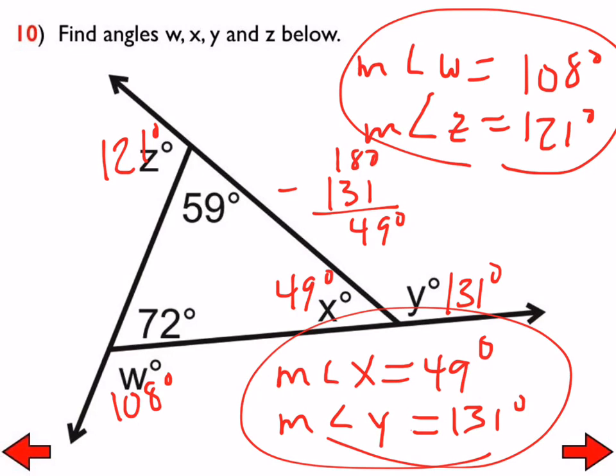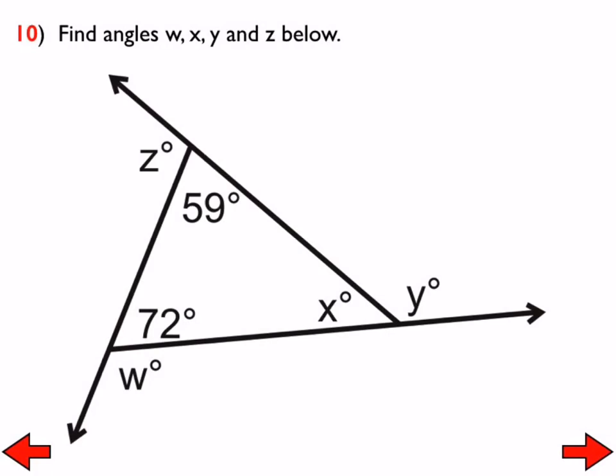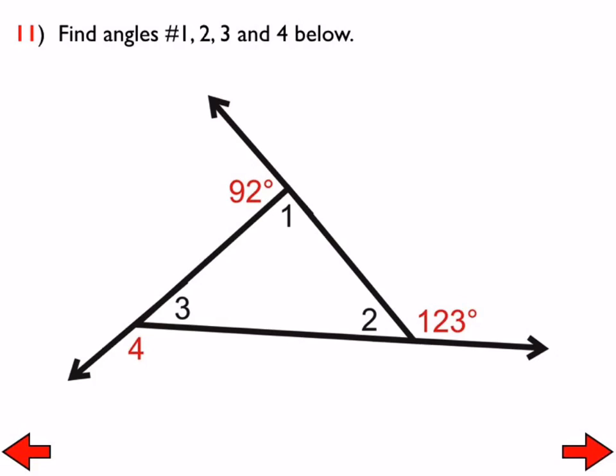Any questions with number 10? So similar ideas in number 11, except we can't use the triangle sum theorem yet because we don't have any of the angles yet. So we're gonna have to use the idea of linear pairs here. So angle 1 is of course 88 degrees because angle 1 and the 92 degree angle form a linear pair. So the measure of angle 1 is 88 degrees. Angle 2 is also based on a different linear pair. Angle 2 and 123 form a linear pair, so therefore it is 57 degrees.